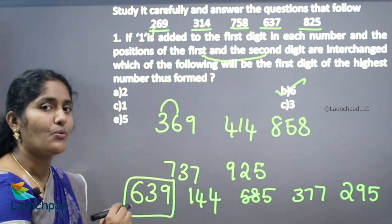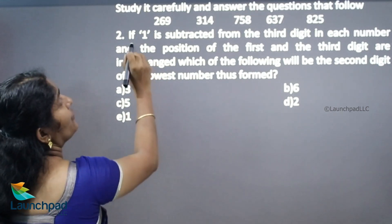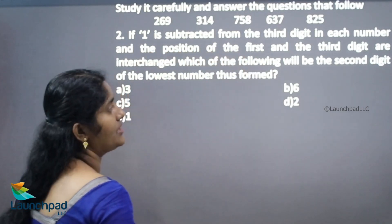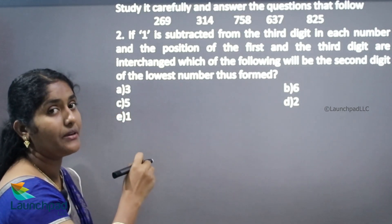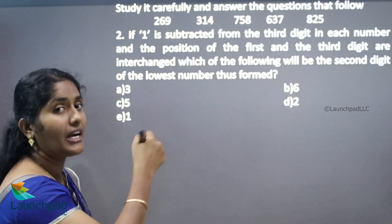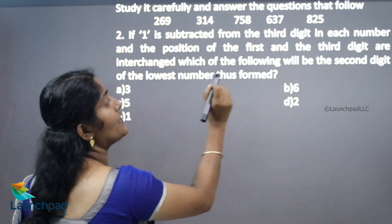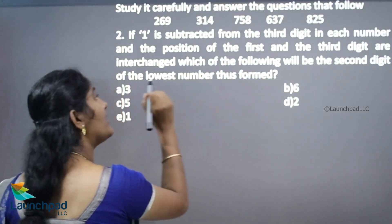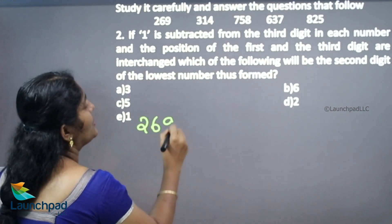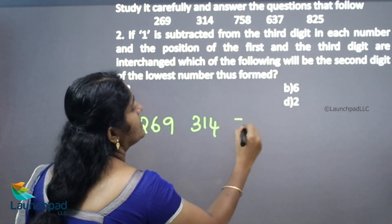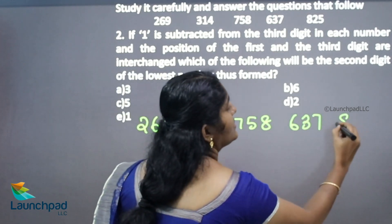Moving on to the next question: if 1 is subtracted from the third digit in each number, and the position of the first and third digit are interchanged. The original numbers are 269, 314, 758, 637, and 825.